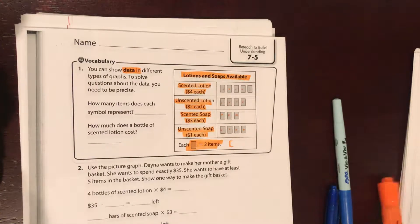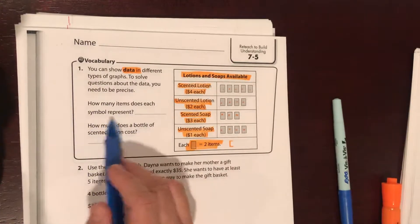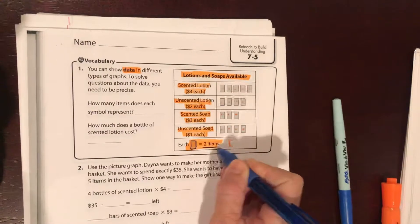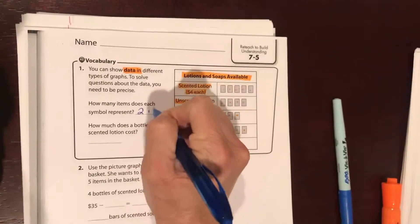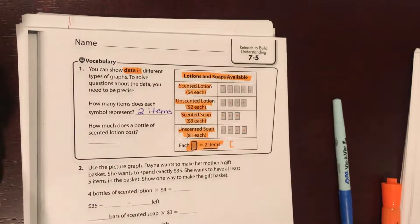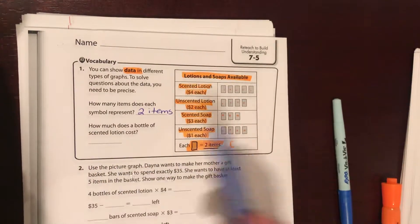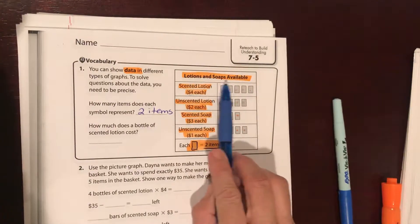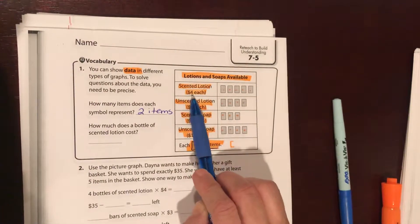How many items does each symbol represent? Two items. How much does each bottle of scented lotion cost? Here's scented lotion, each bottle costs four dollars each.